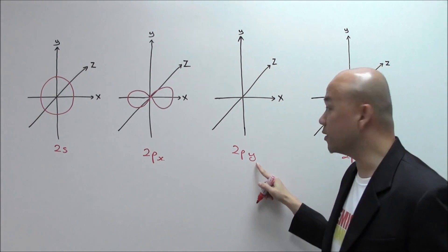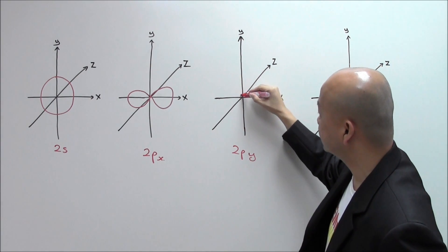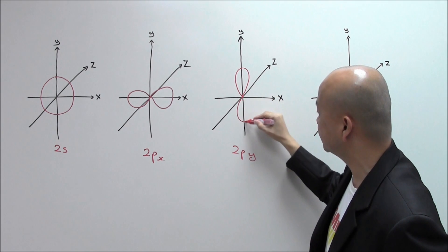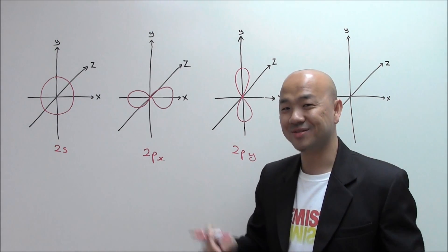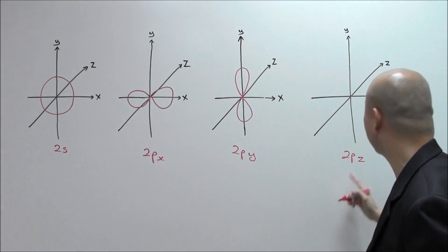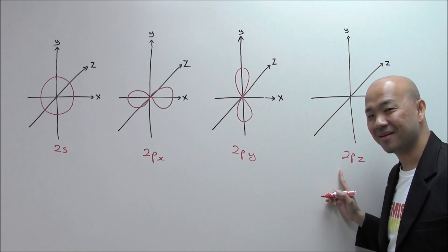What about 2PY? Since it's PY, then it will be in the direction of the Y axis, so it should look something like this. That will be your 2PY.